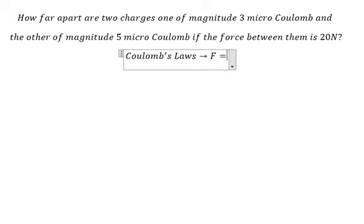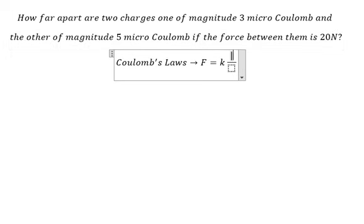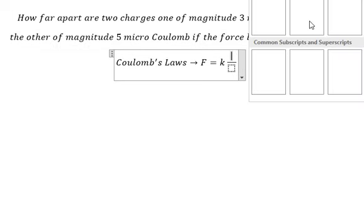The formula is F equals k multiplied by the absolute value of q1 and q2 over r squared.